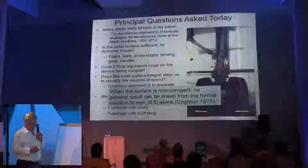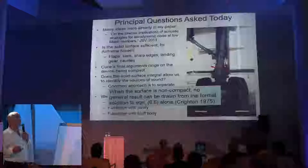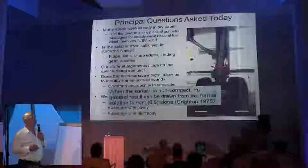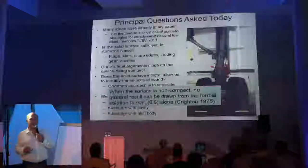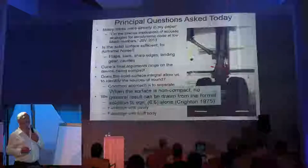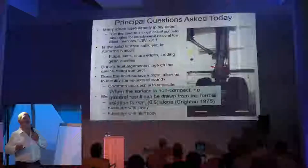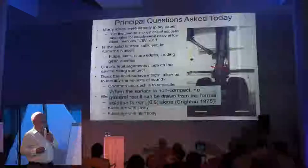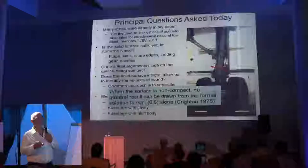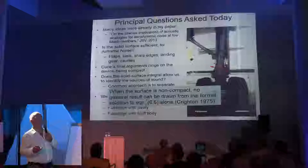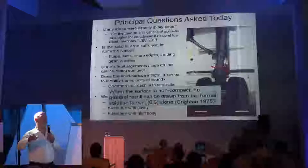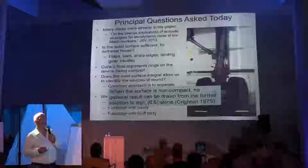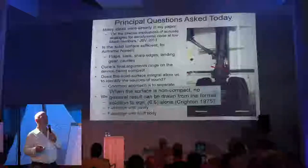I have some citations from Crichton's 1975 review paper. He was commenting on Curl's paper and said: when the surface is non-compact, no general result can be drawn from the solution. Curl made three approximations: the observer distance is large compared with the size of the landing gear — fine; the observer distance is large compared with the wavelength — fine; and the landing gear is compact. But we're very interested in frequencies like a kilohertz, and that wavelength is not large compared with the size of the landing gear. So a lot of people in the field believe Curl's scaling law with M to the sixth power, but it applies only if the wavelength were much larger than the size of the device.